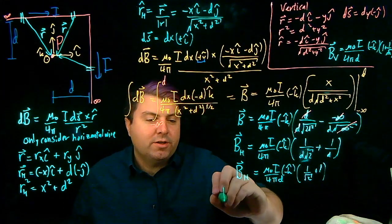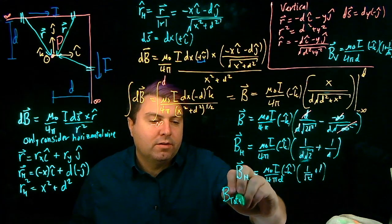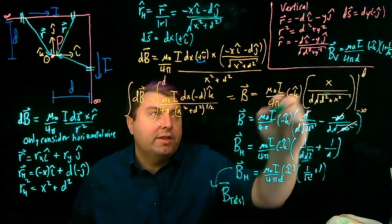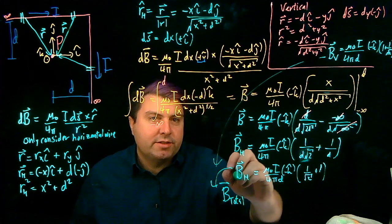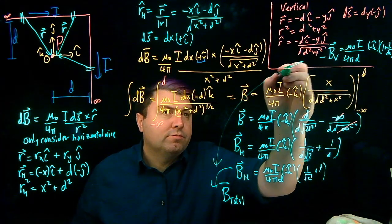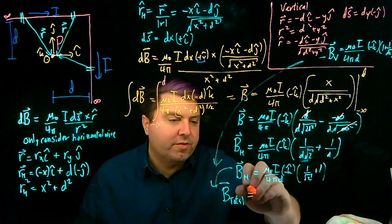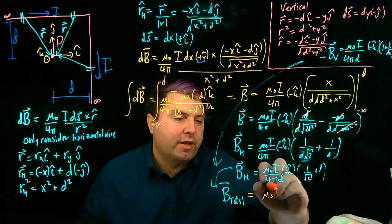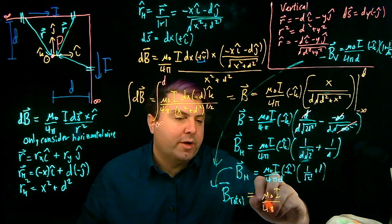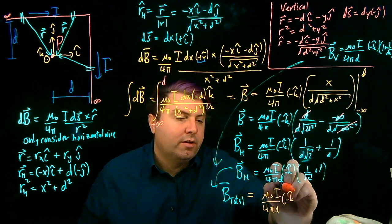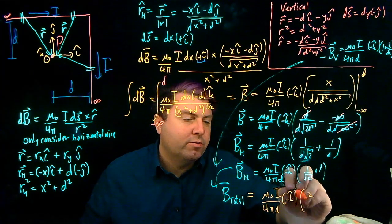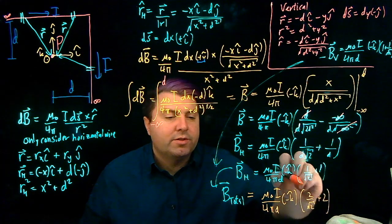And so then our B total, as we combine this, will be just 2 of this. So we can do mu naught i over 4 pi d negative k hat. And then we can do 2 over root 2 plus 2.